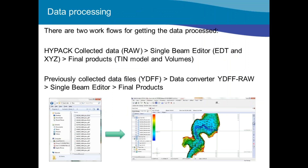Data collection is only half the job. There are two processing workflows: HIPAC collected RAW data files go through the single beam editor to produce edited files, then to XYZ for final products via TIN model or cross sections and volumes. The Guam dataset was previously collected as YDSF files, which need to be converted to HIPAC RAW format first. The left side shows both RAW and YDSF files — the YDSF files from the Guam data were converted to RAW files and then processed.